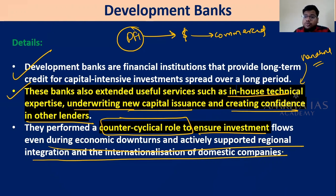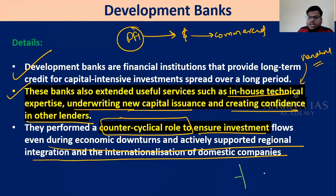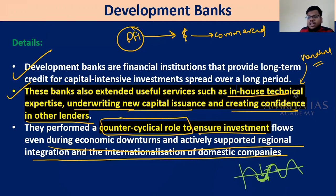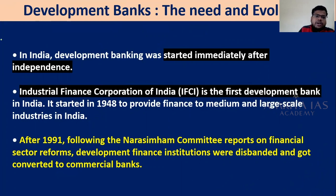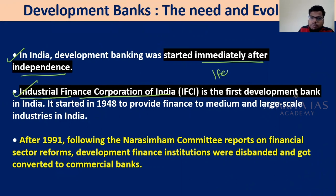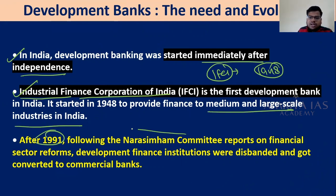DFIs perform a countercyclical role to ensure investment flows even during economic downturns, and actively support regional integration and internationalization of domestic companies. Countercyclical means: when the economy is down, DFIs help revive it. In India, development banking started immediately after independence — the first institution was the Industrial Finance Corporation of India (IFCI) in 1948, providing finance to medium-to-large-scale industries. In 1991, the Narasimham Committee's report on financial sector reform led to DFIs being disbanded and converted into commercial banks or AIFIs.